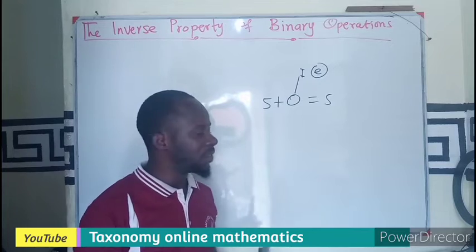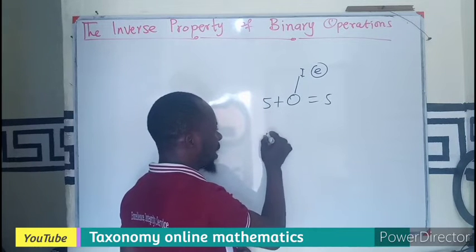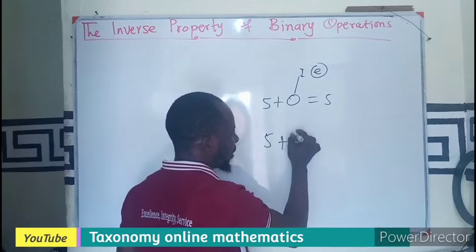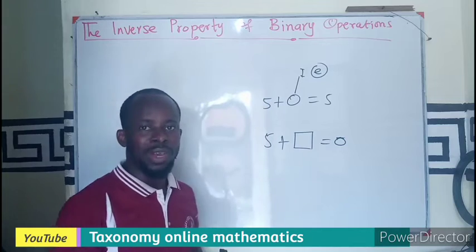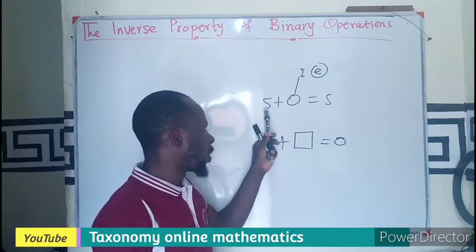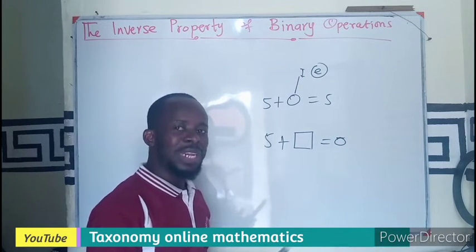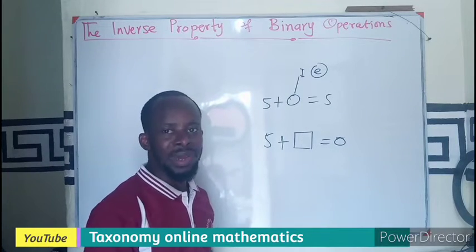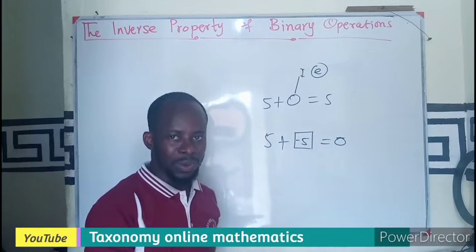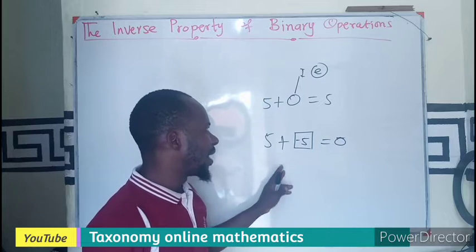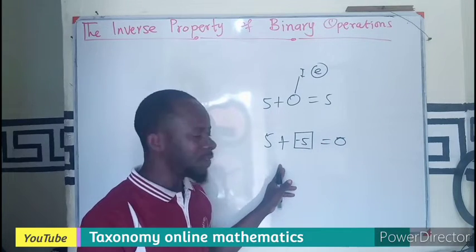Now to find the inverse, I need to get back my identity element. So: five plus some value gives me back my identity element. I am looking for a number that, when added back to the original, gives my identity element. Which number added to five gives zero? That number is negative five — five plus negative five is zero. So zero is the identity element, and the inverse of five is negative five.